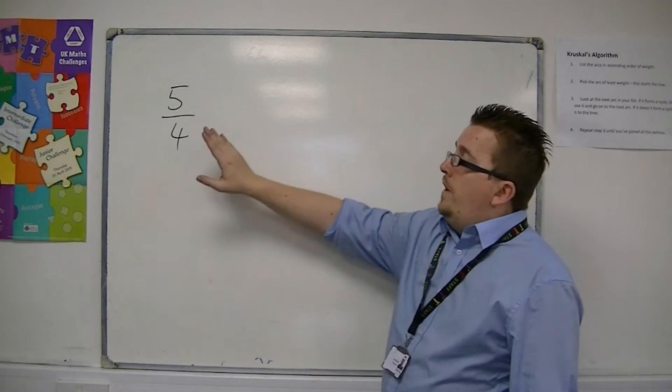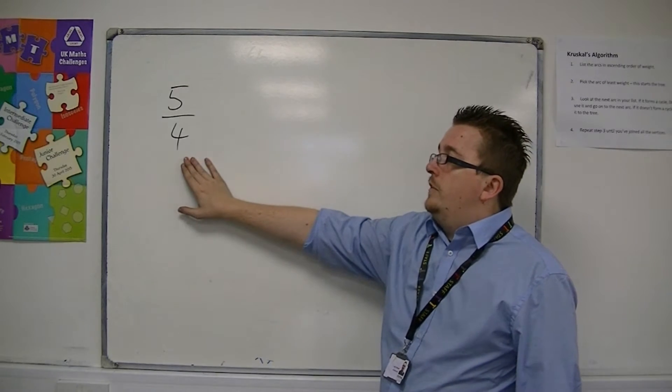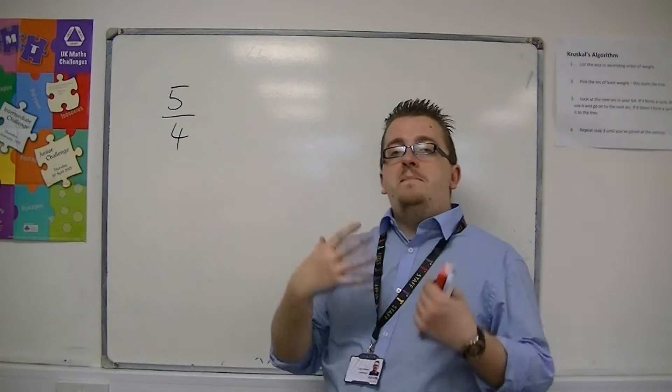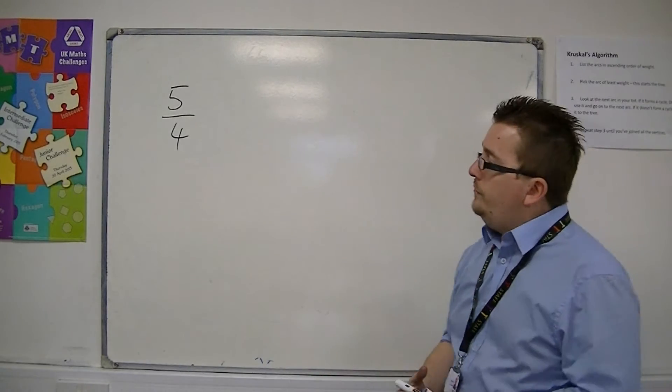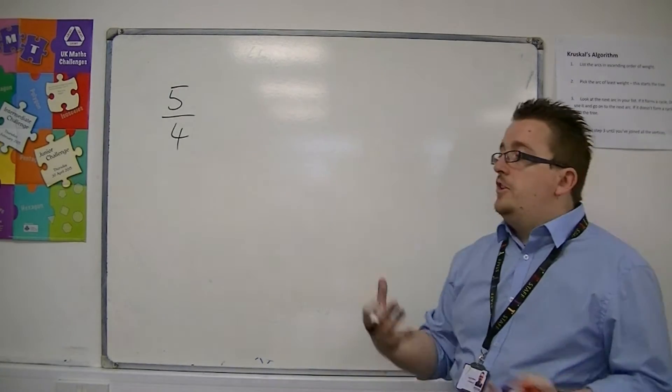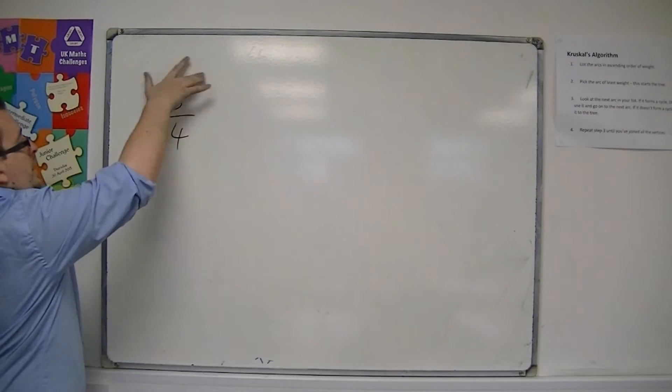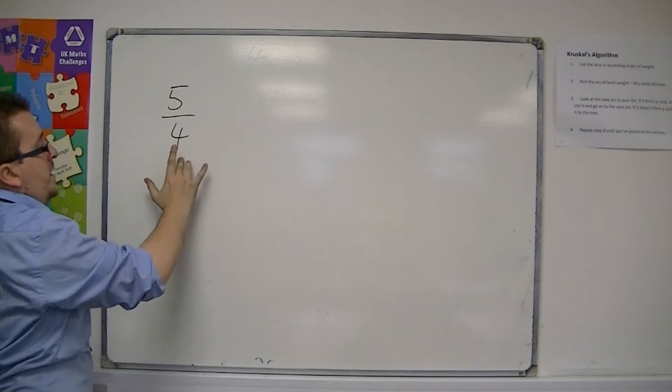And with working with improper fractions, you might be asked to turn this into what is called a mixed number. So to turn this into a mixed number, you look at doing a calculation of the top divided by the bottom.